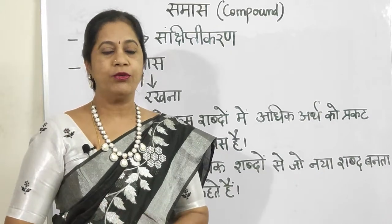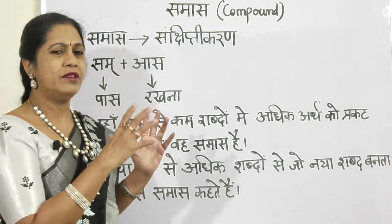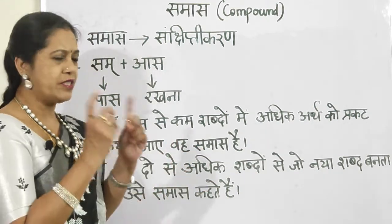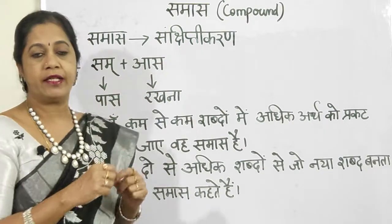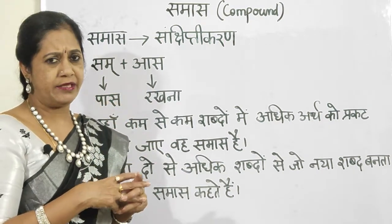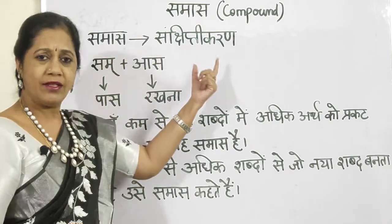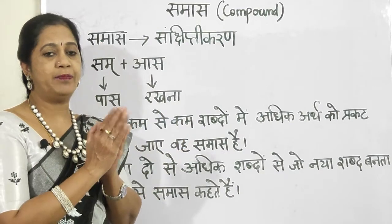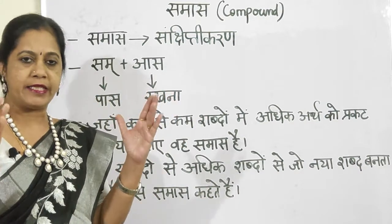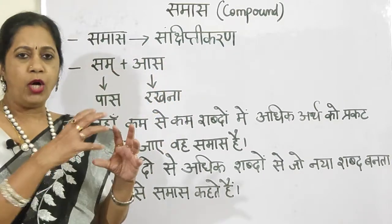Let us go into it without wasting time. First I wanted to tell you what Samas actually is. We are talking about compounds, but what are they? I've given a word called Sankshiptikaran — that is to make it crisp or precise. We use this word in Hindi: Sankshiptikaran. So Samas means Sankshiptikaran — to make it precise, make it short, make it crisp. A big sentence, almost like a full sentence, you make into a word — that is Samas.